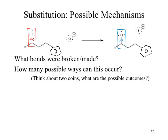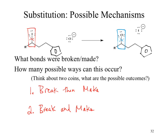So two things happened. What are the possible ways that we could get those two things to happen? We could break and make the bond — meaning they're happening at the same time — or we could break then make, meaning they're happening not at the same time. These would be the different mechanistic steps that we just walked through with that big long quiz question.